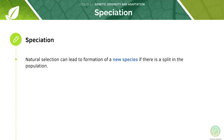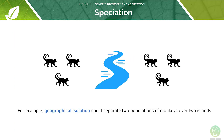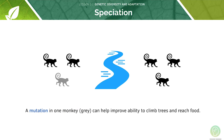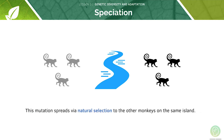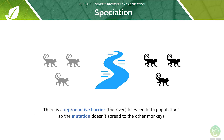Natural selection can lead to the formation of a new species if there is a split in the population. For example, geographical isolation could separate two populations of monkeys over two islands. A mutation in one of the monkeys can improve the ability to climb trees and reach food. This mutation spreads by natural selection to the other monkeys on the same island. There is a reproductive barrier — the river — between both populations, which means that the mutation doesn't spread to the other monkeys.